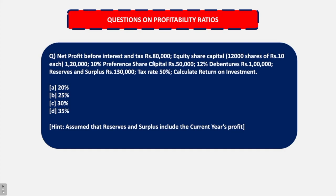Net profit before interest and tax are given as 80,000. Equity share capital is given as 1,20,000. Preference share capital is 50,000. 12% debentures, 1,00,000. You have to find out return on investment. So return on investment is EBIT upon capital employed. EBIT is net profit before interest and tax, 80,000.